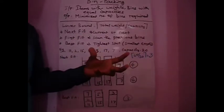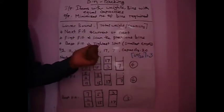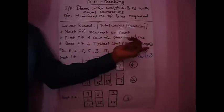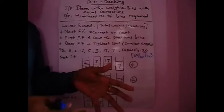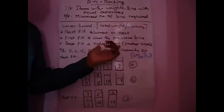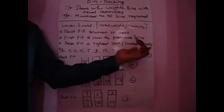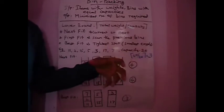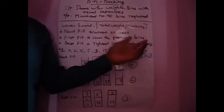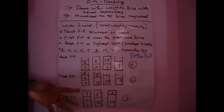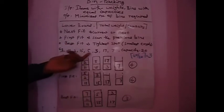Best Fit is one of the approaches which gives the optimal solution most of the time. It places the item by leaving the smallest empty space in each bin — finding the tightest spot to place that item, leaving only a smallest empty space remaining in that bin.